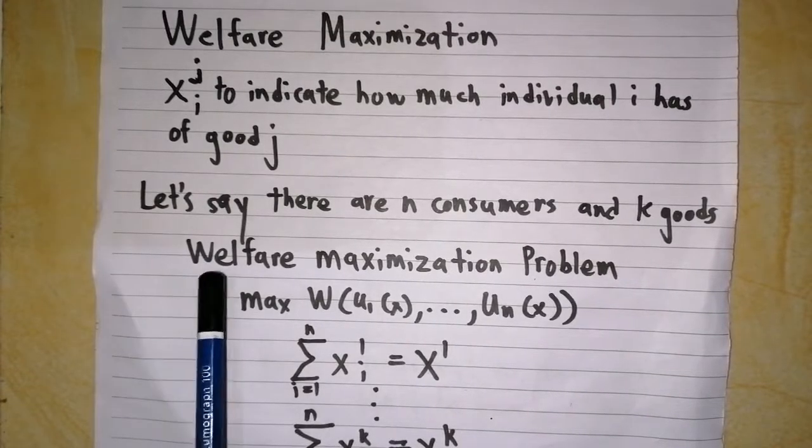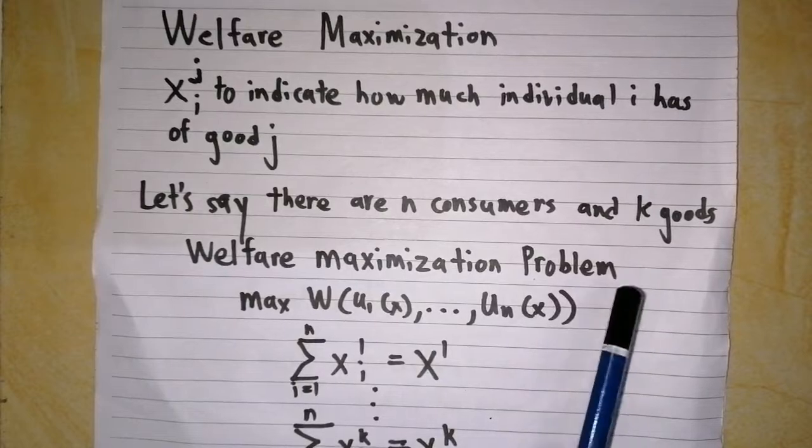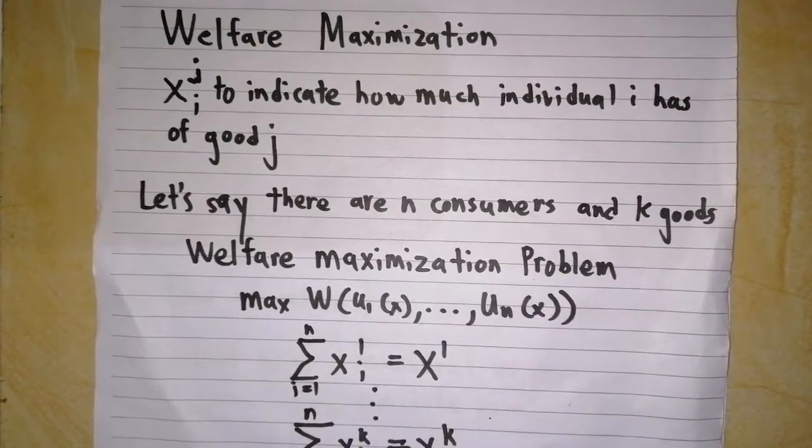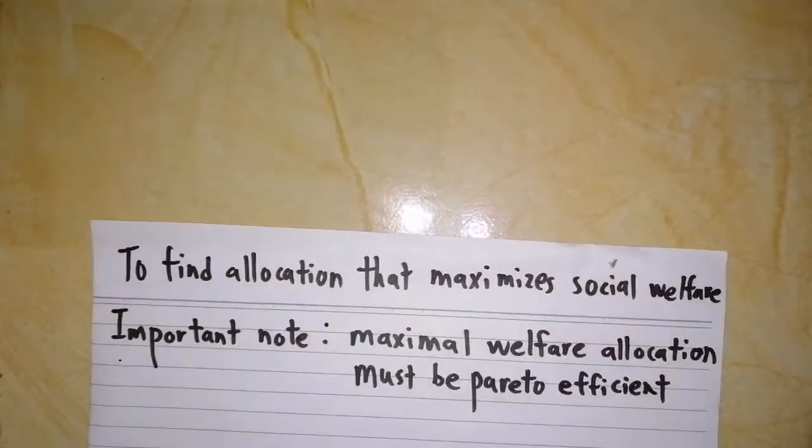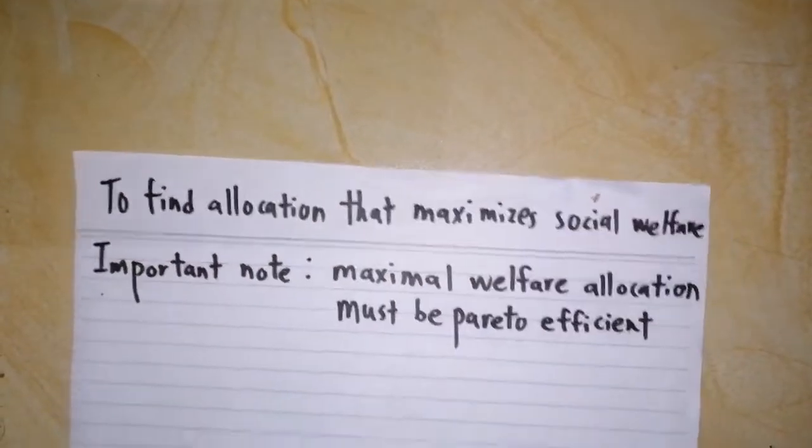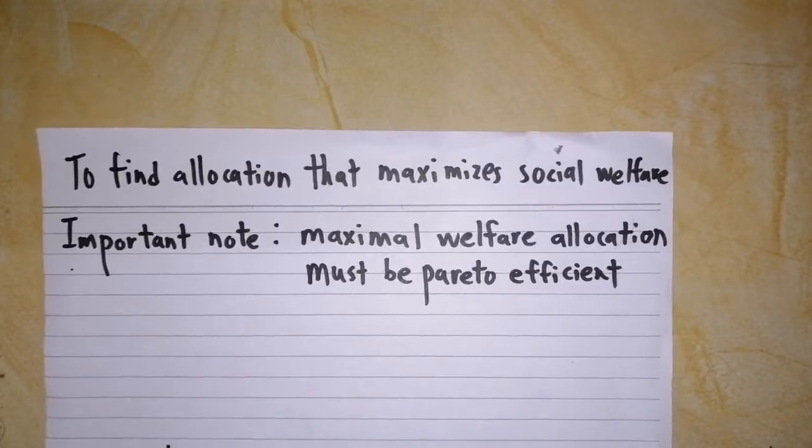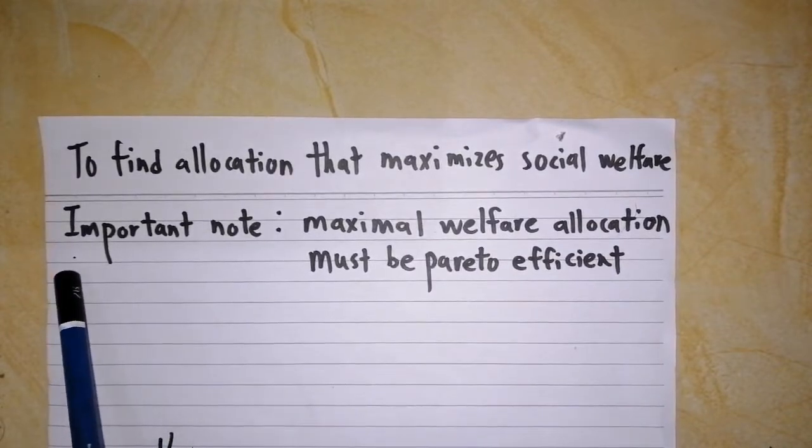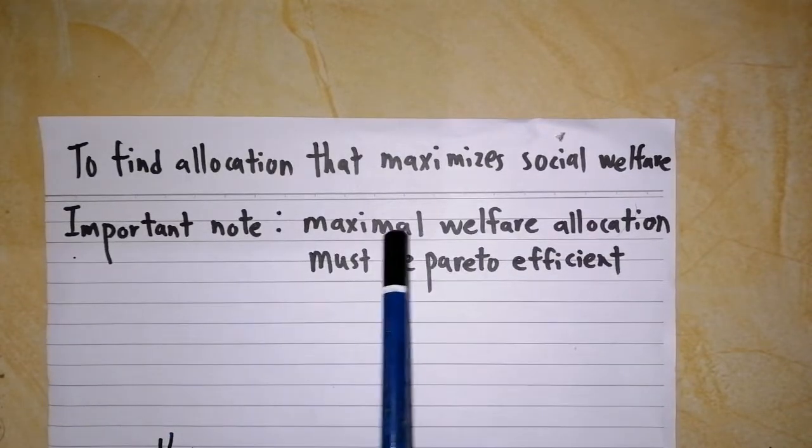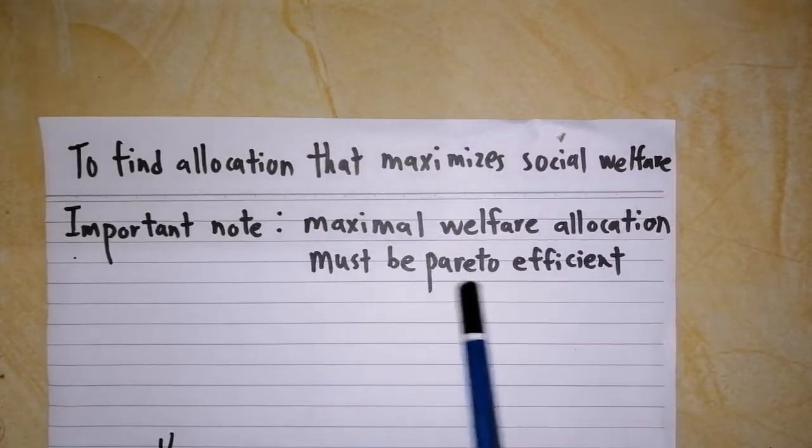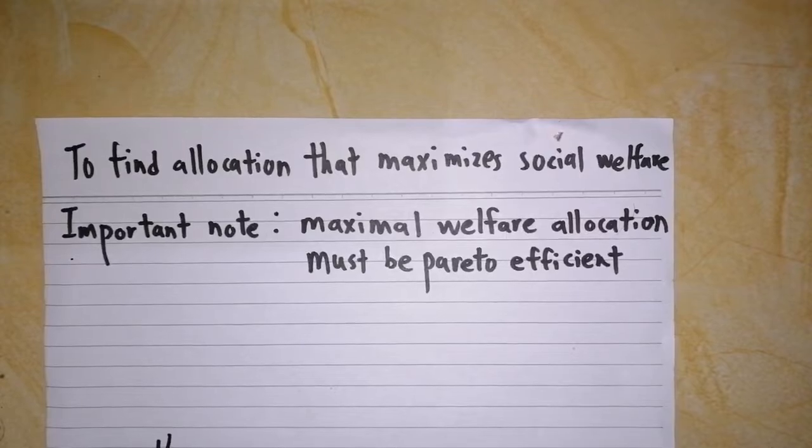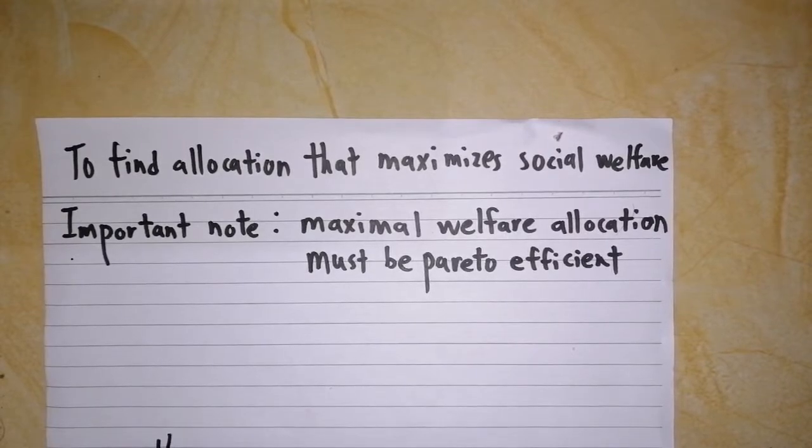Now we can pose a welfare maximization problem. What we are trying to find is an allocation that maximizes social welfare. Here I have an important note: maximal welfare allocation must be Pareto efficient. And this statement can be proved and illustrated by using the diagram below.